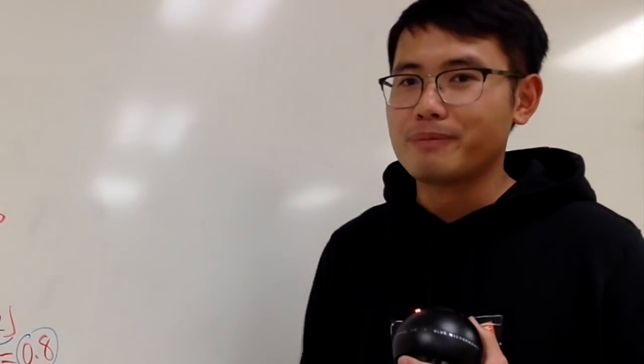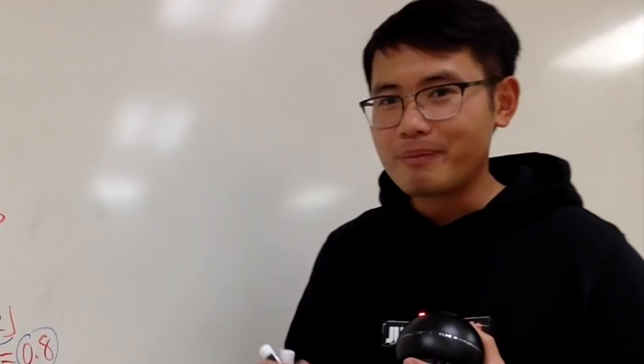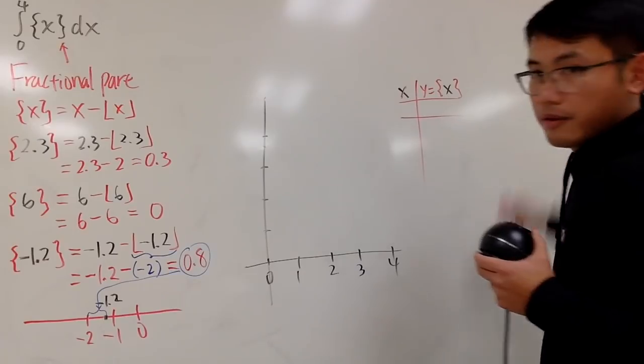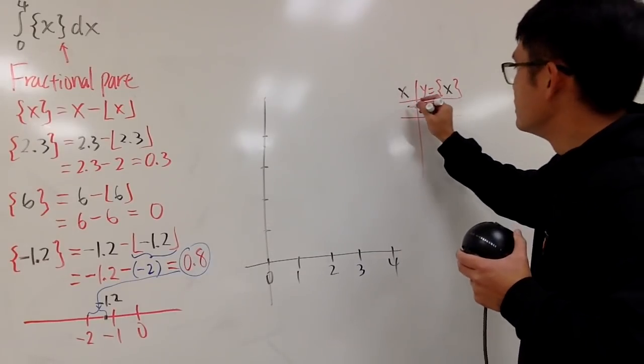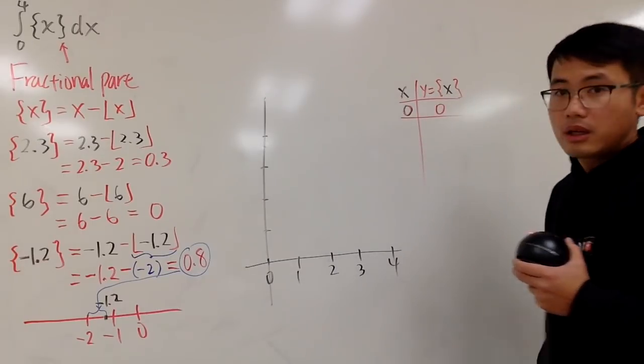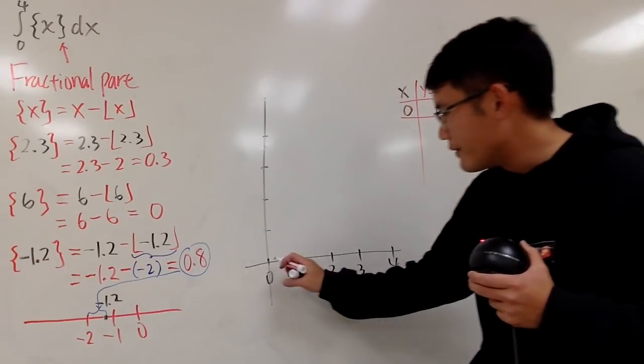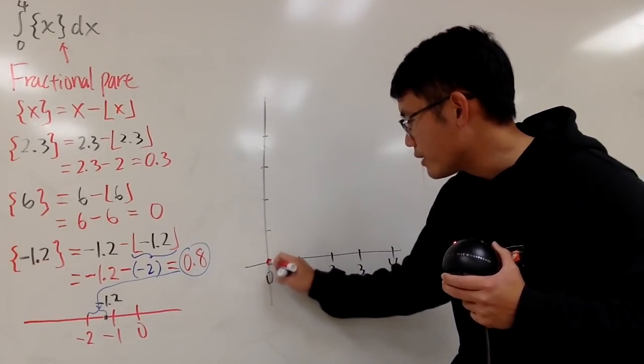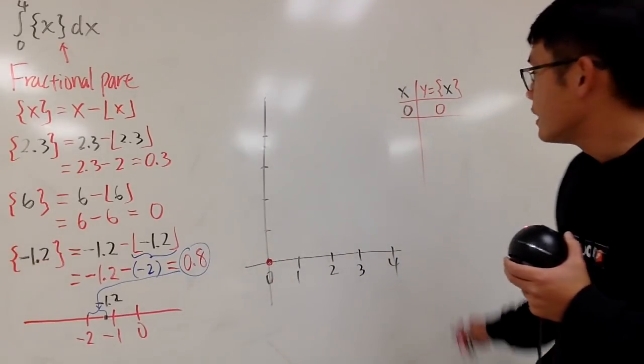We still have to integrate it. It's okay. Let's talk about how to use a graph to integrate that. First of all, when x is 0, of course, you get 0 for the y value. So, you have the first point right here, 0, 0.